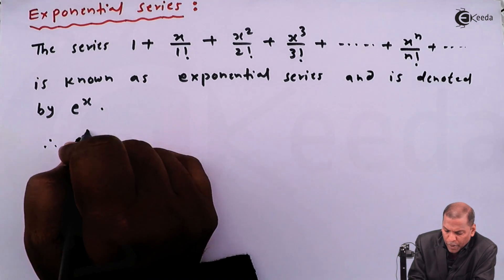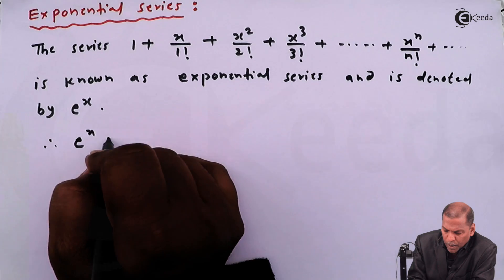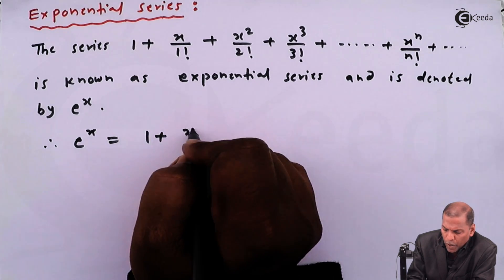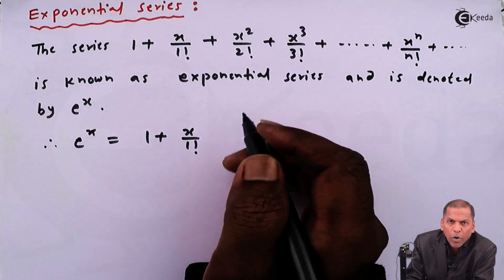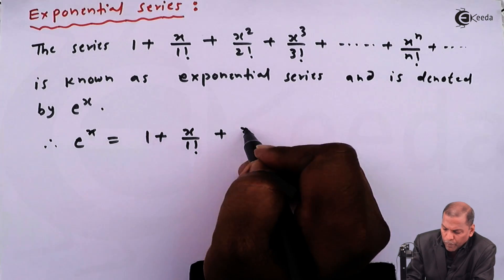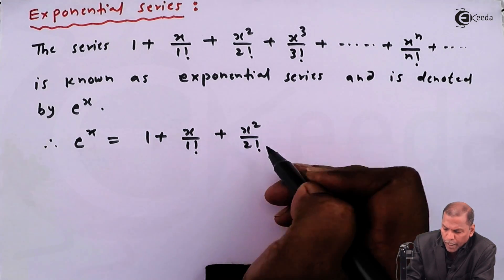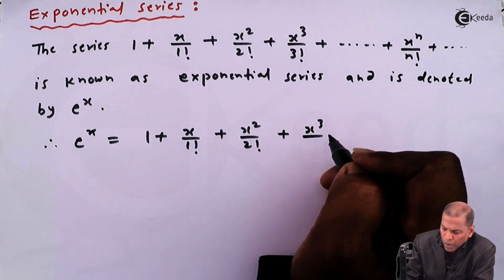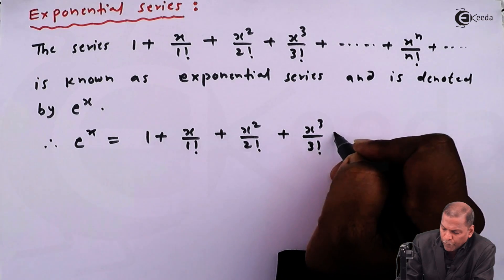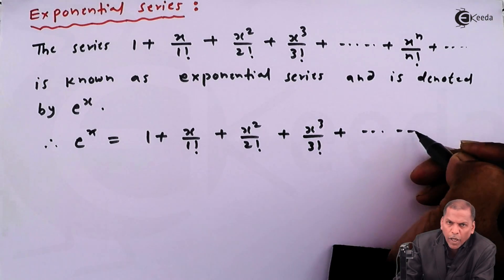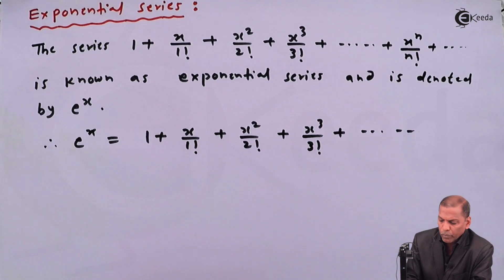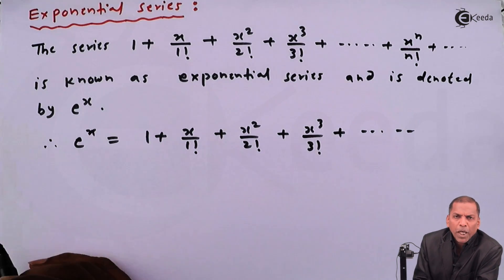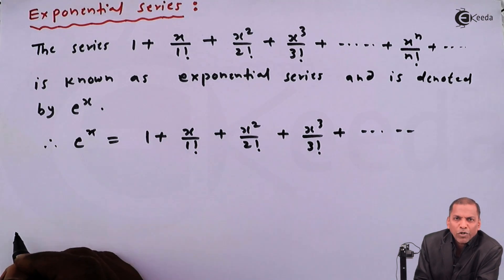Therefore, e raise x is equal to 1 plus x upon 1 factorial plus x squared upon 2 factorial plus x cubed upon 3 factorial, and going on. Now we see the results which are based on the exponential series.